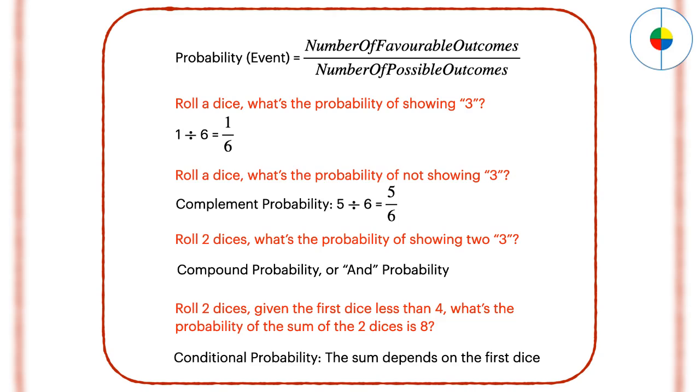A compound probability combines at least two simple events, also known as a compound event. When we flip a coin twice, the outcomes are compound probability. It's also called and probability.